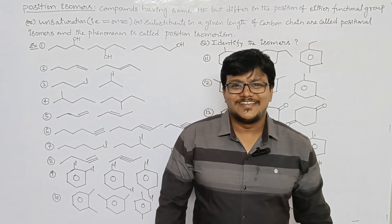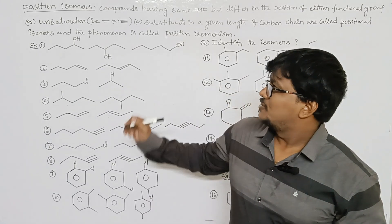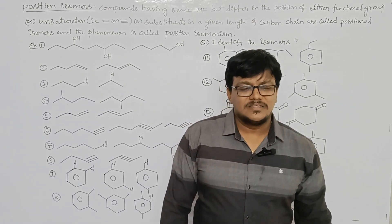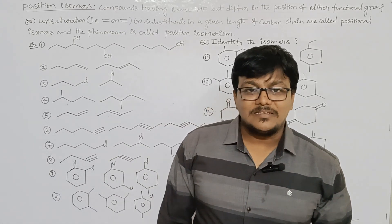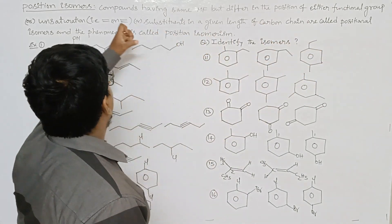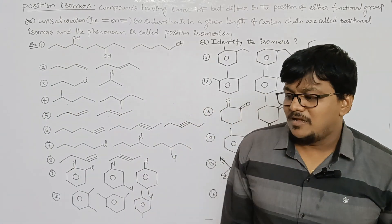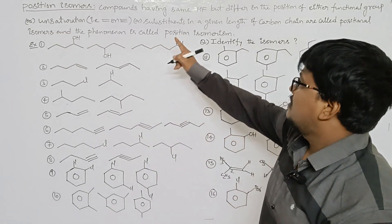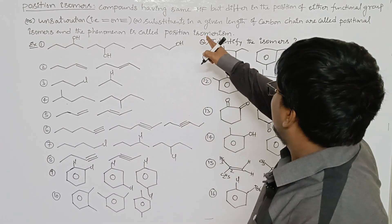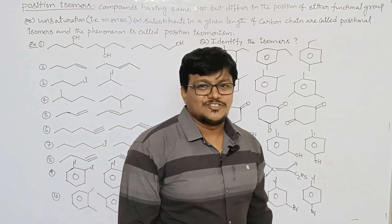Hello students, this is Argan Kishore. Today we are going to discuss about positional isomers. Positional isomers means compounds having the same molecular formula but differing in the position of either a functional group or unsaturation — meaning either a double bond, triple bond, or substituent.